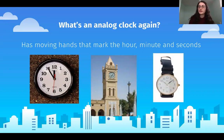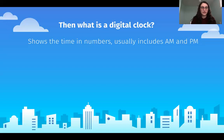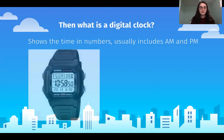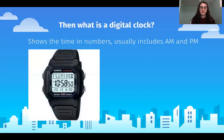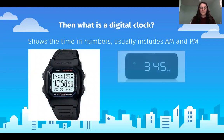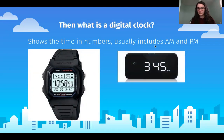Not all watches show an analog clock. I can think of one person in our class who does not wear an analog clock watch — it is Shailene. She wears a digital clock watch, and it shows the time in numbers, usually showing a.m. and p.m. A digital clock like you might find on someone's nightstand shows, for example, 3:45 p.m.